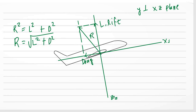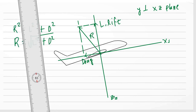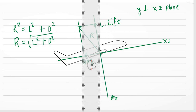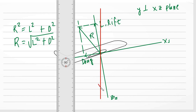Next, where is the weight? If I construct a vertical line with the intersection as my reference, this would be the line along which my weight is found. The weight of the aircraft would be along that line — weight W.